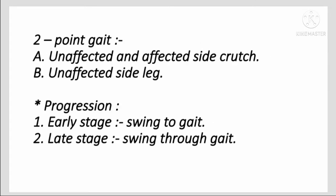In 2-Point Gait pattern for crutches with non-weight bearing: unaffected and affected side crutch together, then unaffected leg. Progression: in the early stage, swing-to gait; in the late stage, swing-through gait.